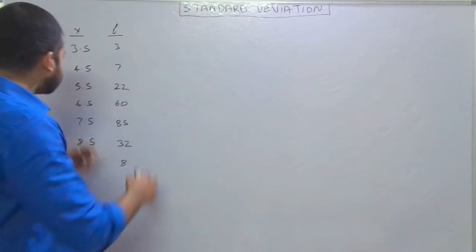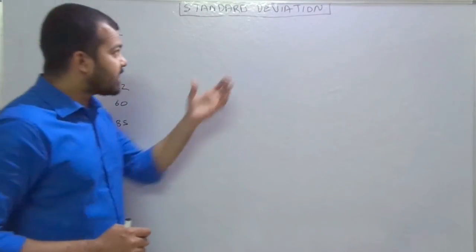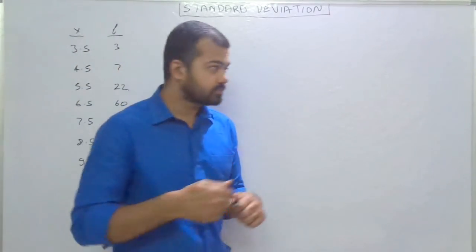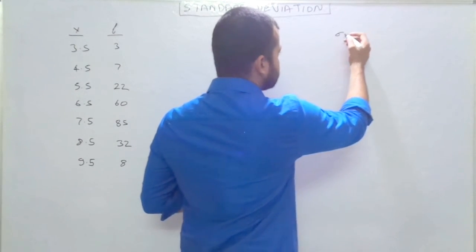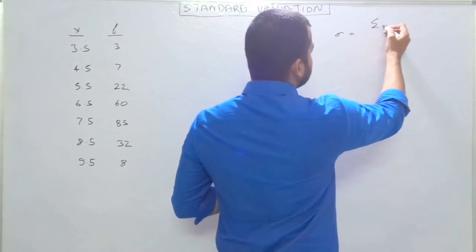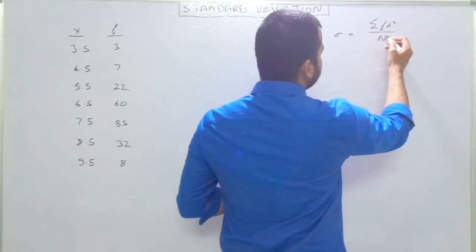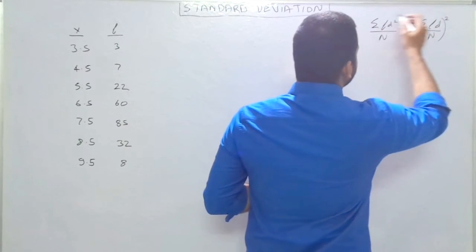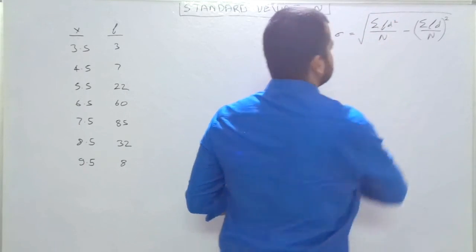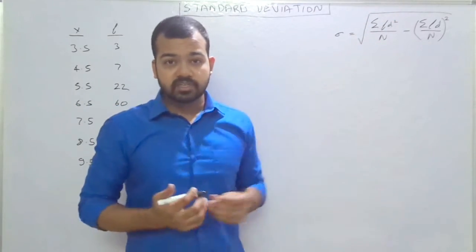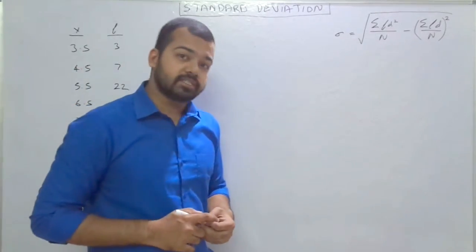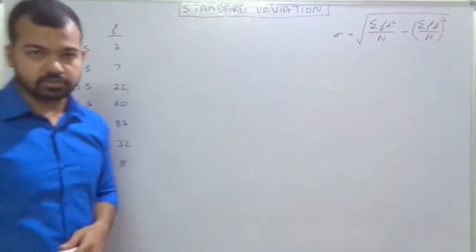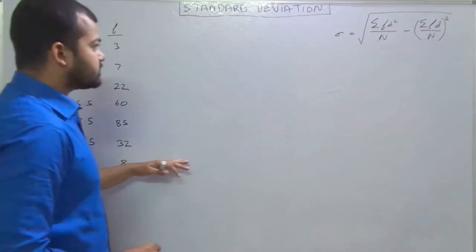Now coming on to the topic — in this video we'll discuss about discrete series. This is how we distinguish discrete series, and this is the pattern we'll use to calculate standard deviation. The first step is to write the formula. Standard deviation is denoted as: under root of summation fd² upon n minus (summation fd upon n) whole square. The only difference from individual series is the addition of f in the formula.